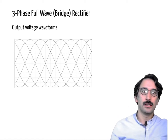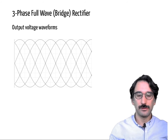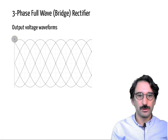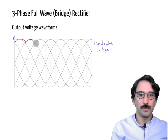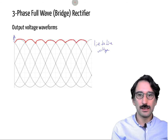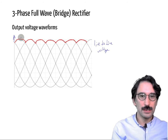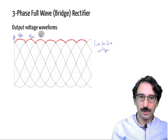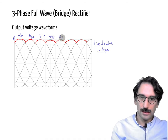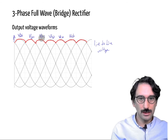Today we will look at the current waveforms in a three-phase full bridge rectifier. Let's remember the voltage waveform — these are the line-to-line voltages. Our output voltage was jumping from one line-to-line voltage to another, and as seen in the previous lecture, there are basically six different possibilities: Vab, Vac, Vbc, Vba, Vca, and Vcb.